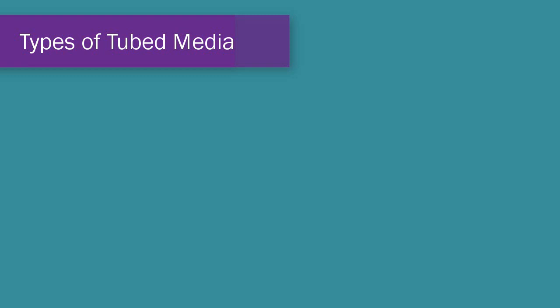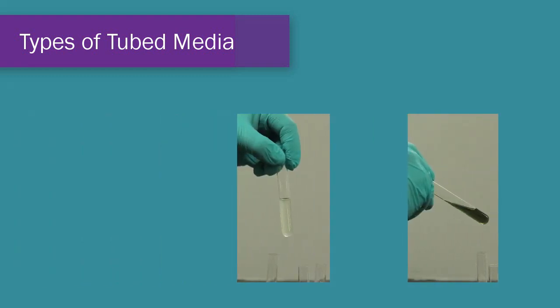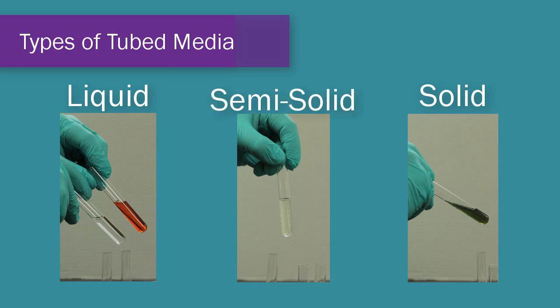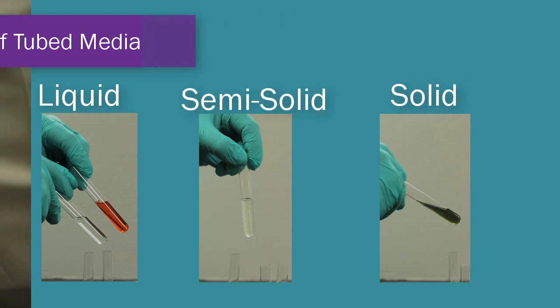I'd like to talk to you today about how to inoculate tubed media. There's basically three types of tubed media that you're going to be using in the microbiology lab. One of them is liquid, one of them is a solid, and the other one is considered a semi-solid media. Let's take a look at what each one of those would look like.